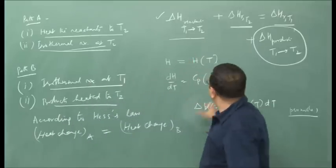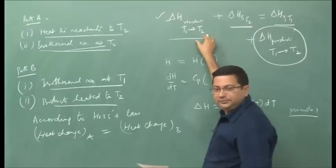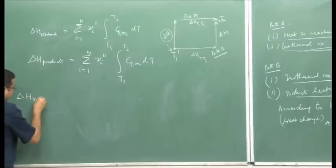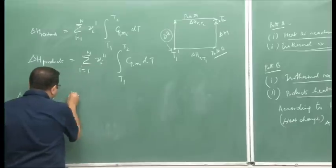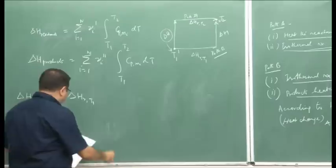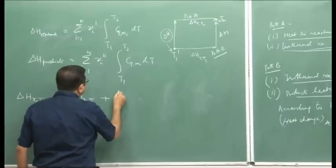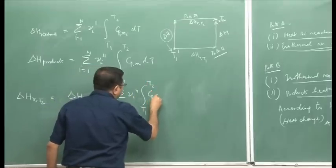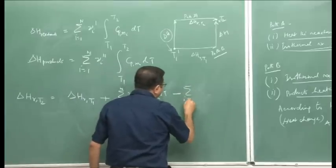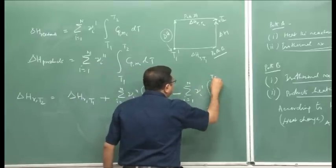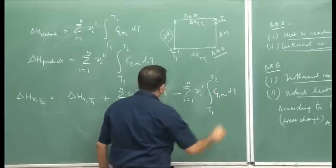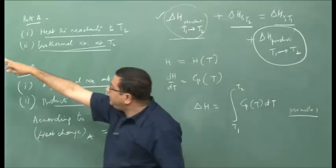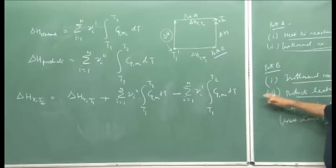Taking all of this and putting it back into the equation, by rearranging we get: the heat of reaction at temperature T2 equals the heat of reaction at temperature T1, plus the change in enthalpy in heating the products from T1 to T2, minus the change in enthalpy in heating the reactants from T1 to T2.